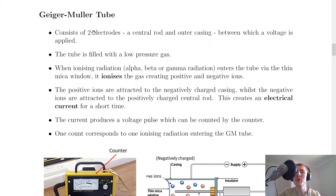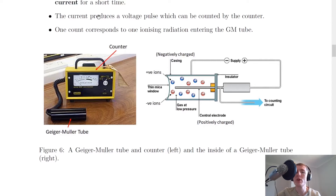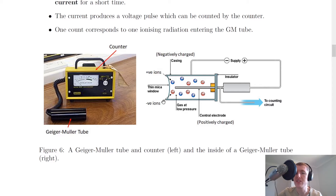The Geiger-Müller tube consists of two electrodes: a central rod and outer casing between which a voltage is applied. Looking at the picture, here's our counter and our Geiger-Müller tube. Inside the tube there are two electrodes — the central electrode and the outer casing. The outer casing has a negative charge and the central electrode has a positive charge, and this difference in charge is really important for how this thing works.